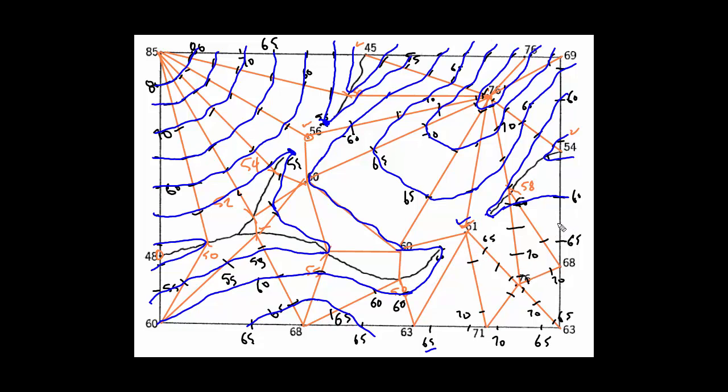The bottom right corner might look a little tricky. Let's trace the 65 contour now. Here's 65. And then 70 comes through like this.